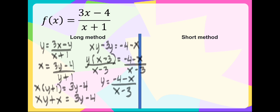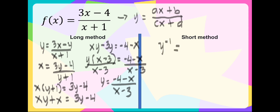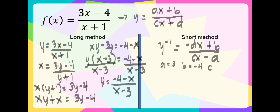For the short method, the general form is y equals ax plus b all over cx plus d. The formula for the inverse is: the inverse of y is equal to negative dx plus b, over cx minus a. As you can see, in the original function a and b are interchanged and the signs become negative. Here a is equal to 3, b is equal to negative 4, c is equal to 1, and d is equal to 1.